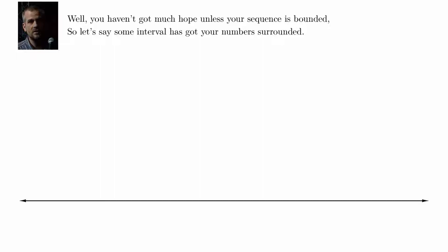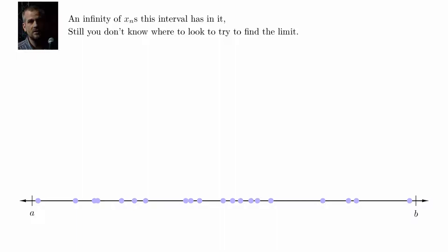Well, you haven't got much hope unless your sequence is bounded. So let's say some interval has got your numbers surrounded. They're all greater than A, they're all less than some B, and it's right there with those points that your thoughts have to be. So to your right is B, and to your left is A, and in between the sequence tries to wind its way. An infinity of X's this interval has in it. Still you don't know where to look to try to find the limit.